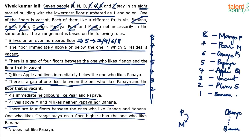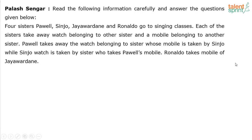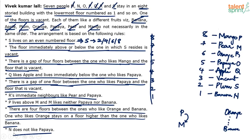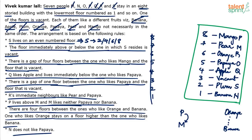N and O are the remaining persons. N does not like papaya, so N cannot come on the papaya floor. Therefore N goes to the banana floor — floor 1 — liking banana, and O goes to the papaya floor liking papaya. The final arrangement from floor 1 to 8 is: fruits — banana, plum, vacant, apple, papaya, orange, pear, mango; persons — N, S, vacant, Q, O, R, M, P.